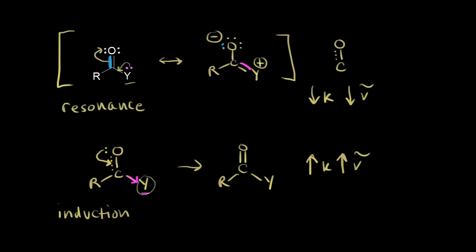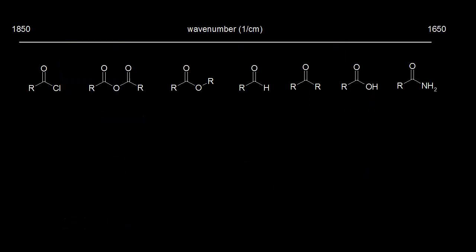These two competing effects — resonance lowering the signal and induction increasing the signal — are what we have to consider for carboxylic acid derivatives. Let's look at a whole bunch of carbonyl compounds and their IR signals. We would expect to find the carbonyl signal in the range of 1850 to 1650 cm⁻¹. A useful way to think about this is to divide that range in half — the midpoint is about 1750, and around 1740 represents an average signal corresponding to an average value for K, or average carbonyl strength.